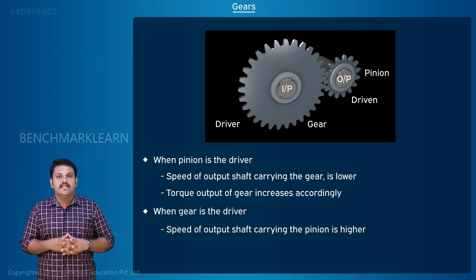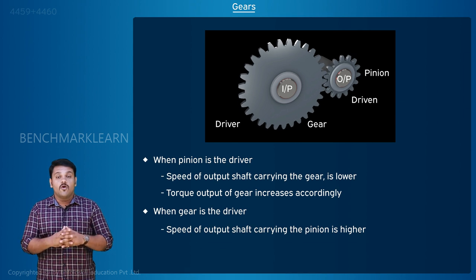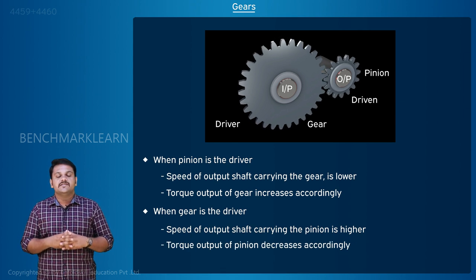When the gear is the driver, the speed of the output shaft carrying the pinion is higher, but the torque output of the pinion decreases accordingly.